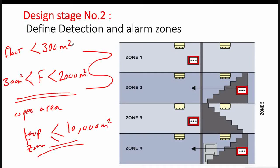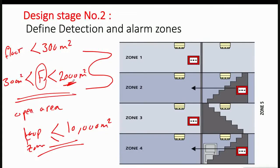Unless the floor area is less than 300 square meters, if the floor area is between 300 and 2,000 square meters, you should assign all the floor to one loop. You can also assign it to more than one loop, because the area may include many rooms requiring a large number of smoke or heat detectors — more than a single loop can support.